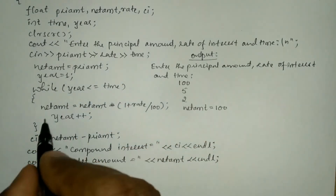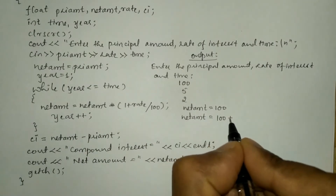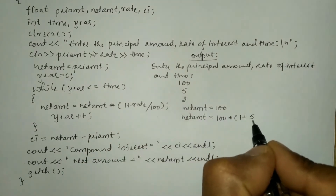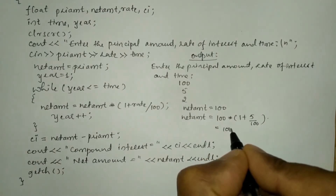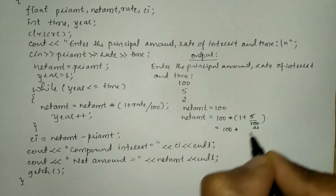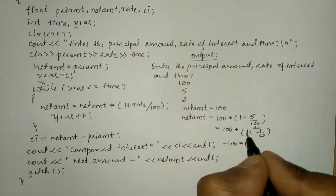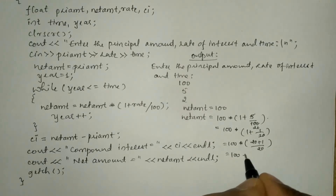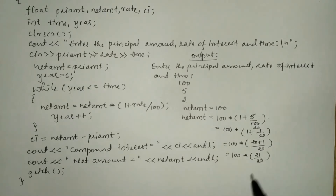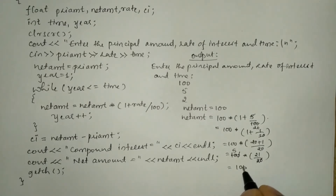Since the condition is true, both statements in the loop execute. Net_amount = 100 * (1 + 5/100). Simplifying: 5/100 = 1/20, so net_amount = 100 * (20 + 1)/20 = 100 * 21/20. Cancelling the zeros: 5 * 21 = 105. So after the first iteration, net_amount = 105.